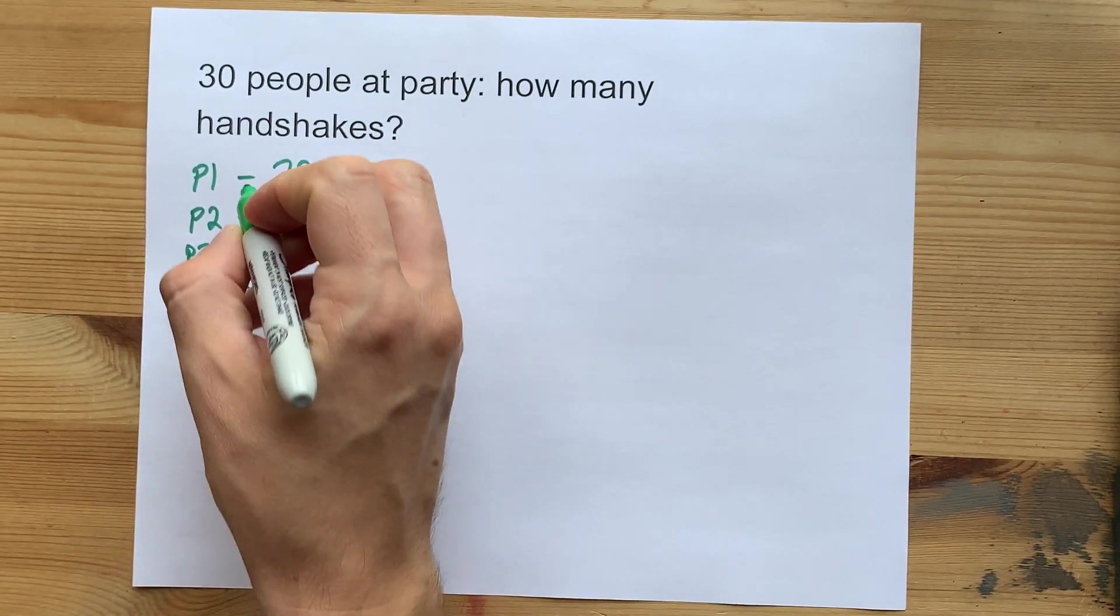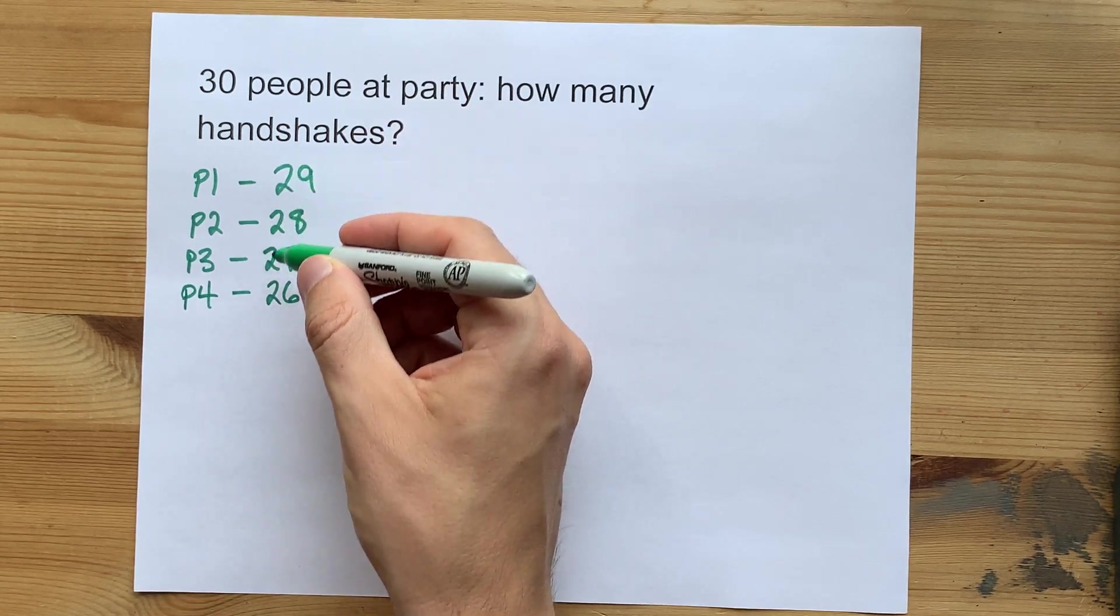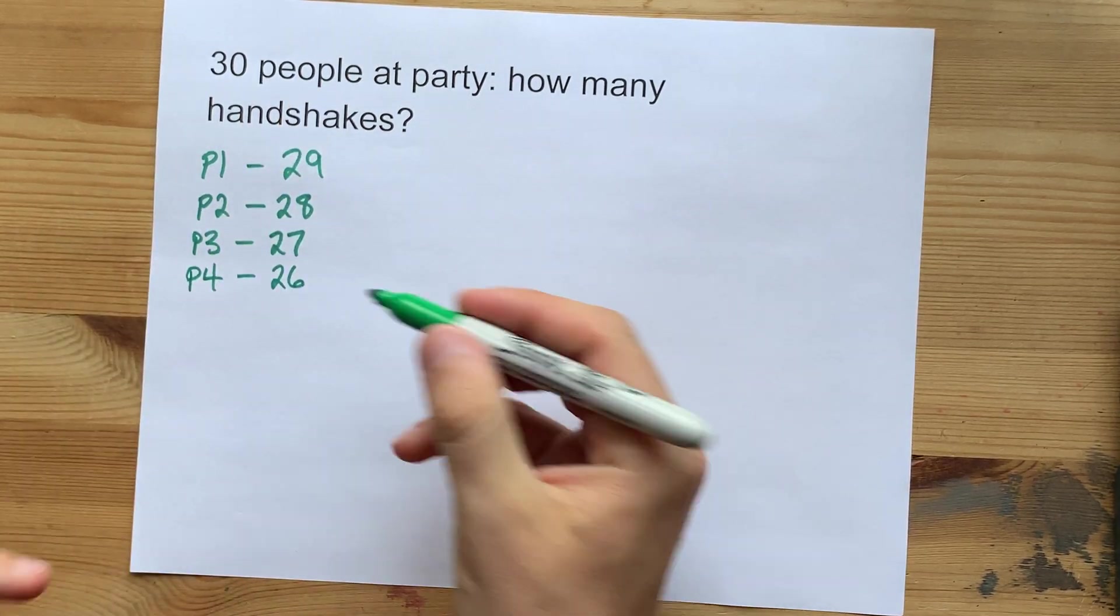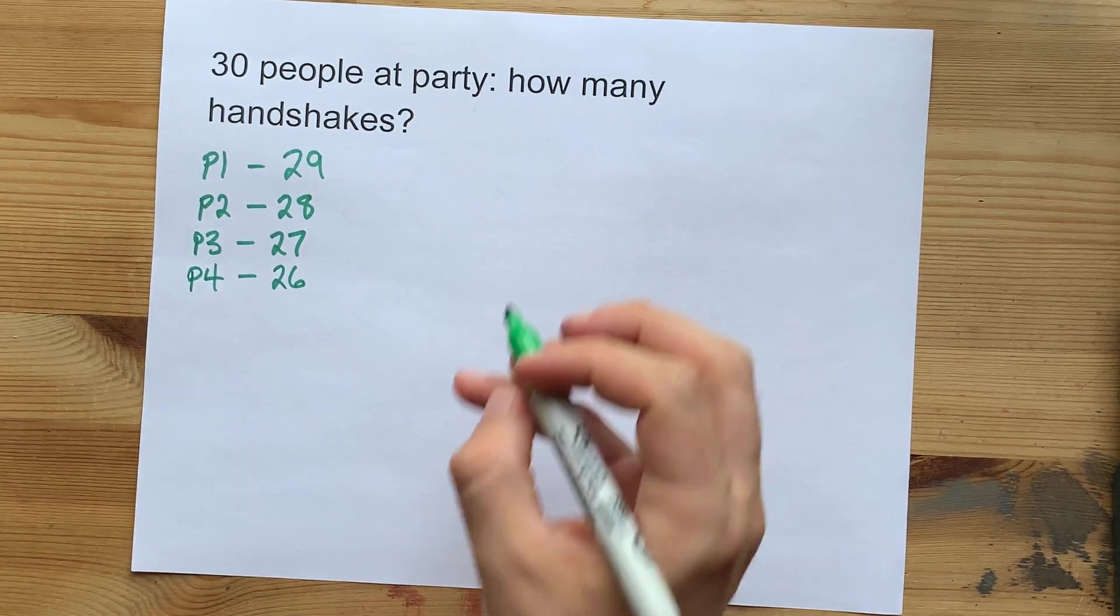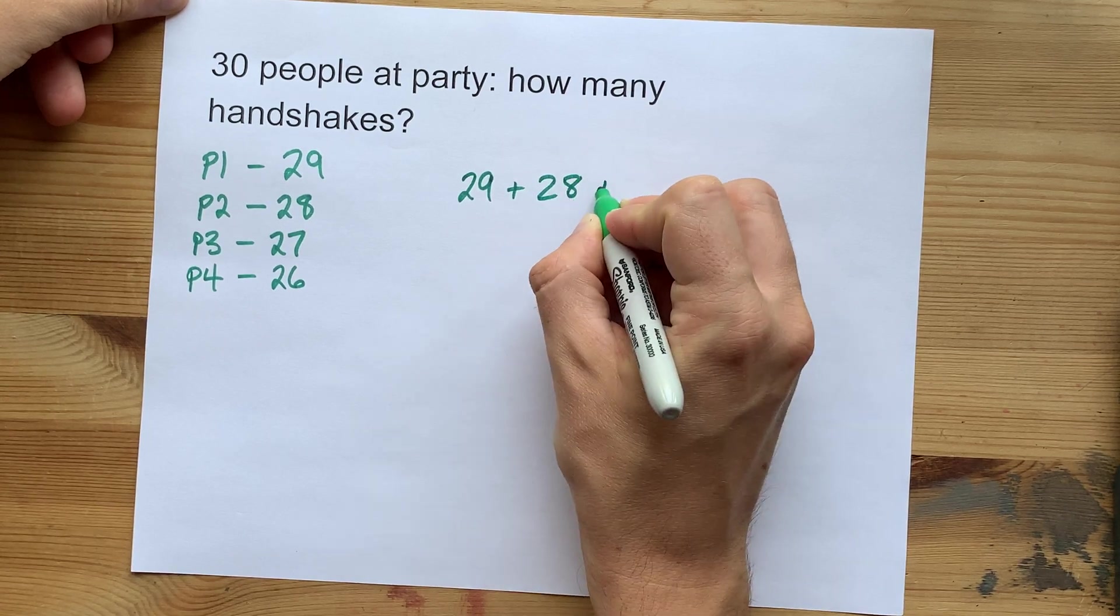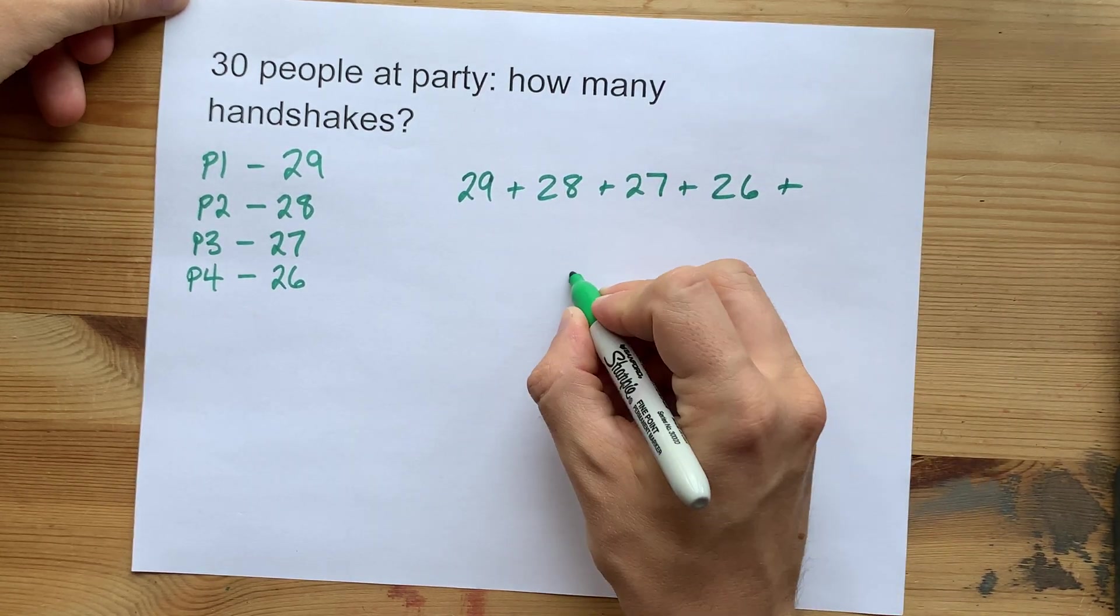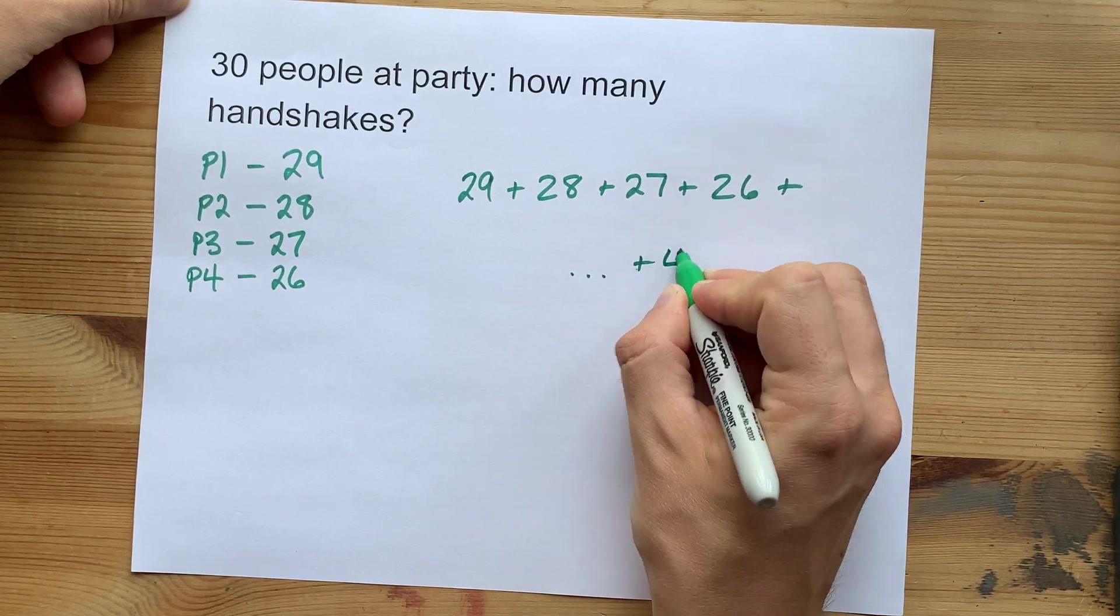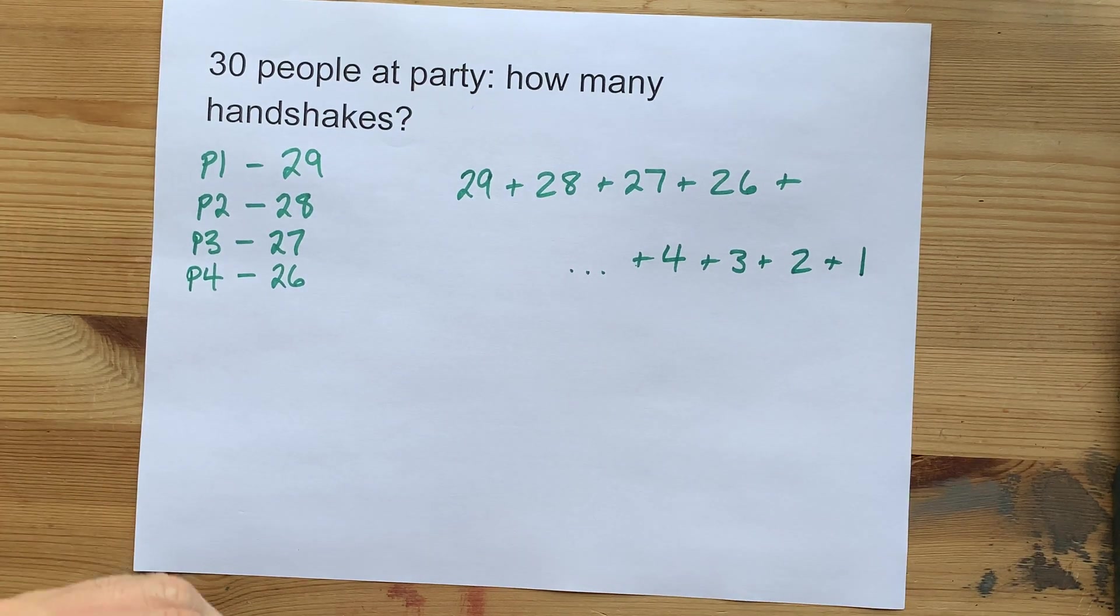We need 30 people. And the number of handshakes that are remaining to be done by each successive person is going to lower each time. So what we have here is 29 plus 28 plus 27 plus 26 all the way down to plus 4 and 3 and 2 and the one final handshake.